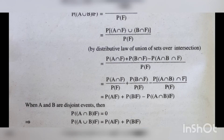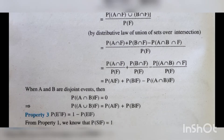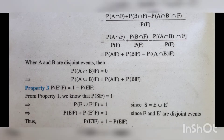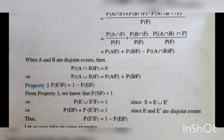Then by the addition rule, we can write it as P of A intersection F plus P of B intersection F minus P of A intersection B intersection F, all divided by P of F. Then by simplification, this becomes P of A given F plus P of B given F minus P of A intersection B given F.